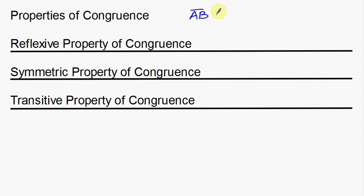For these examples, I'm going to use the segment AB, the segment CD, and the segment EF. These are just arbitrary segments I'm going to use for my definitions. With congruency, it has to deal with shapes, figures, and lines, whereas equality usually just deals with numbers.